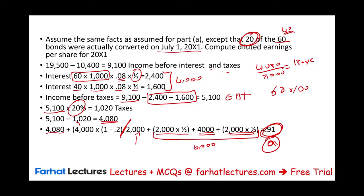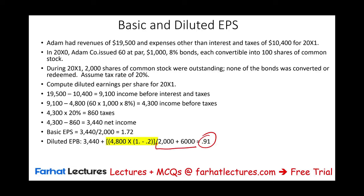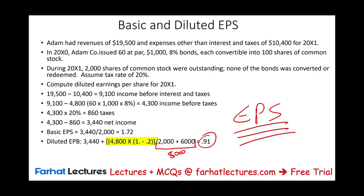Whether the bonds are converted or not, we assume conversion of all of them for diluted EPS purposes. That's why the answer is the same as the first question — we end up with 8,000 shares in the denominator and diluted EPS of $0.91. If you're studying for your CPA exam, go to FarhatLectures.com for additional lectures, MCQs, true-false questions, and exercises. Invest in yourself — earnings per share is an important topic. Good luck, study hard, and stay safe.